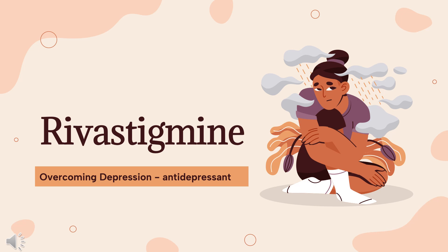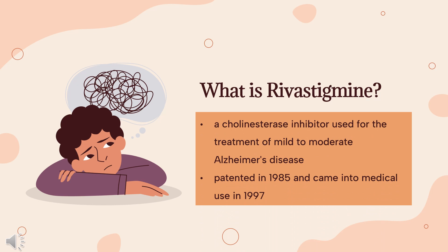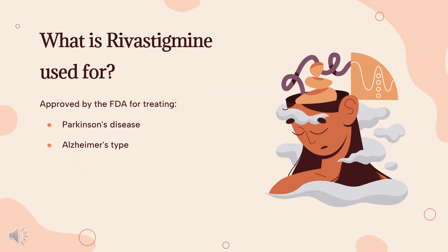Rivastigmine is a cholinesterase inhibitor used for the treatment of mild to moderate Alzheimer's disease. The drug can be administered orally or via a transdermal patch. The latter form reduces the prevalence of side effects, which typically include nausea and vomiting. It was patented in 1985 and came into medical use in 1997.